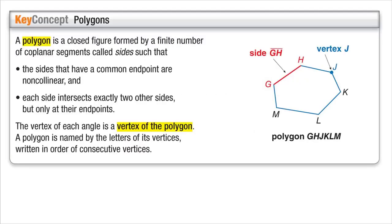Polygons. This might be a new concept to you. So a polygon is a closed figure formed by a finite number of coplanar segments called sides. So each one of these is a side to our polygon. And our polygons have common endpoints and are non-collinear. The sides of a polygon have a common endpoint and are non-collinear.